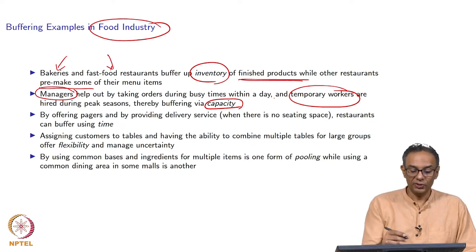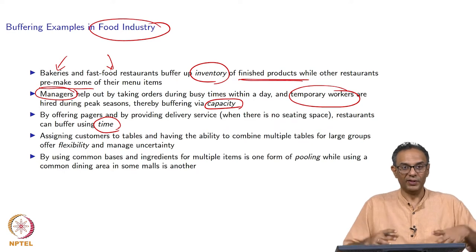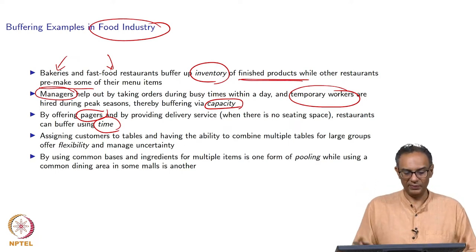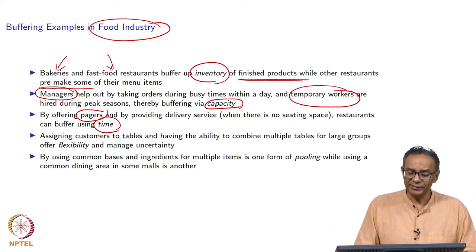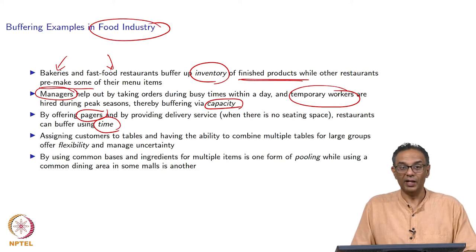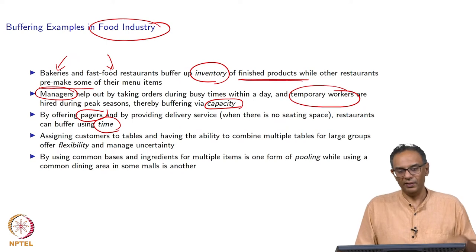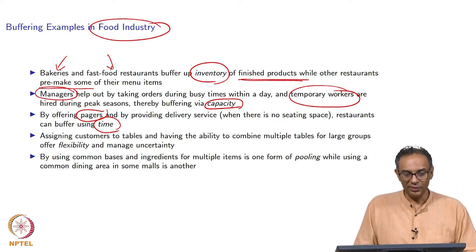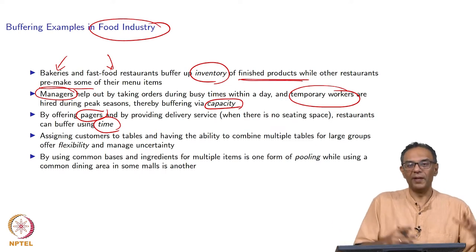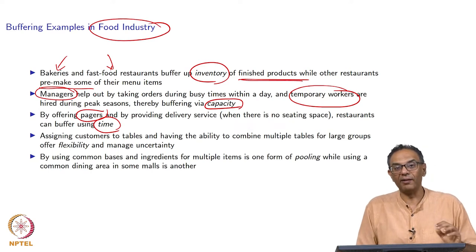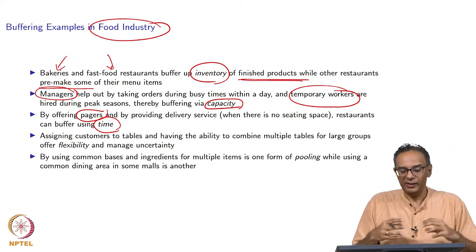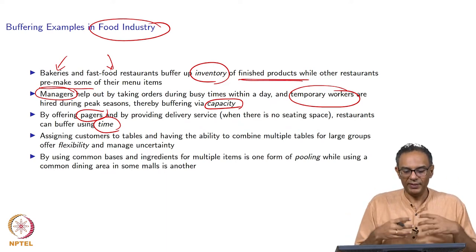Another thing you can do is buffer by time. If your restaurant is full, you give pagers — little devices that light up when your table is ready. Some places offer free delivery service: if there is no room, they take your order and deliver it to you. It takes a little bit of time, and that is why it is buffering by time. Postponing a request is buffering by time. Anticipating requests and carrying inventory is buffering by inventory. Increasing your service capability right then and there is buffering by capacity.